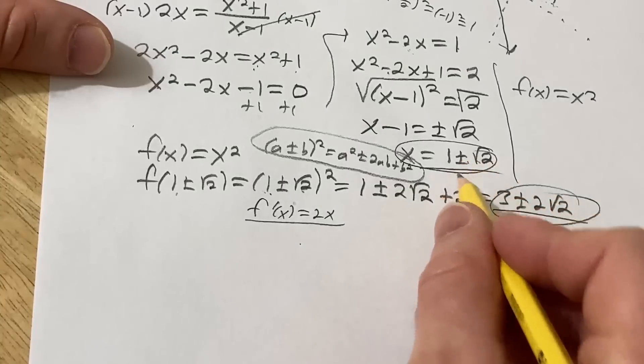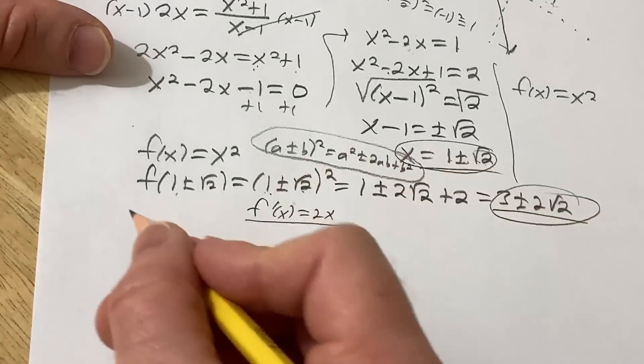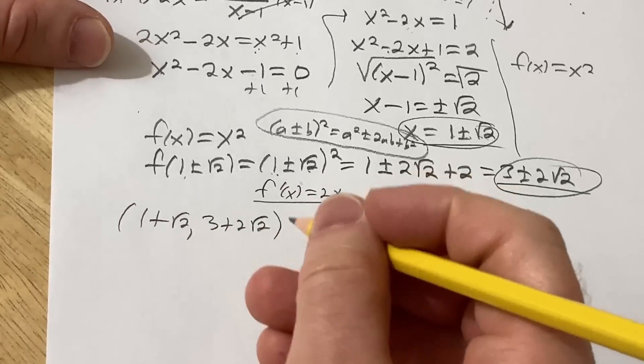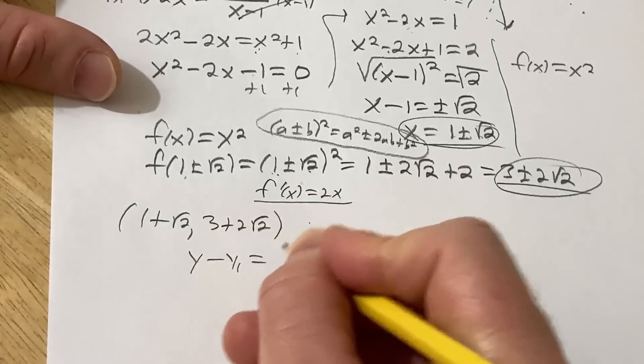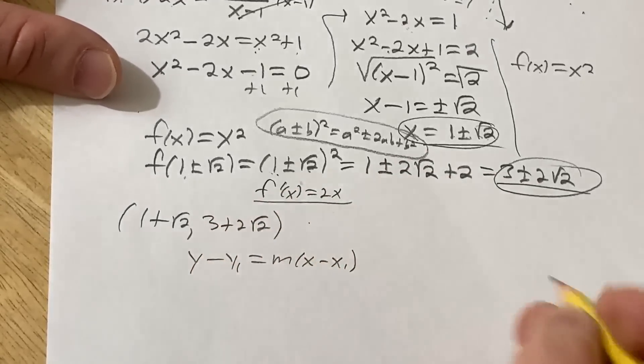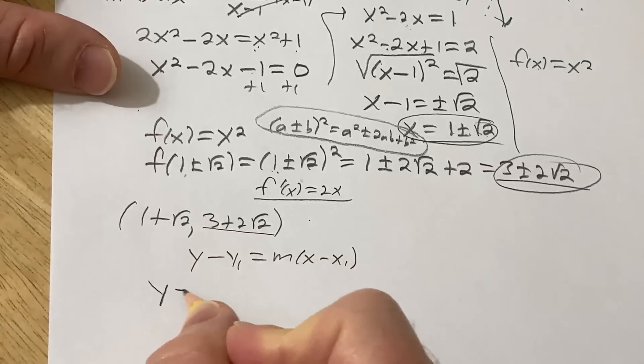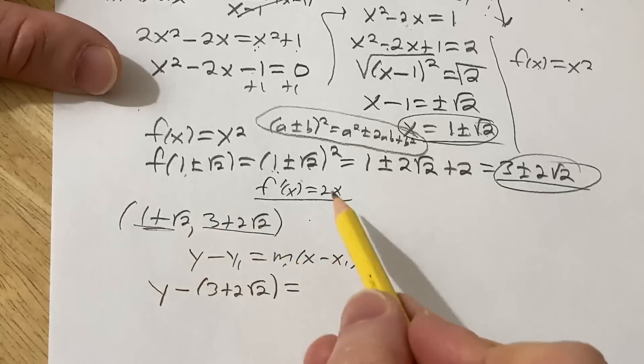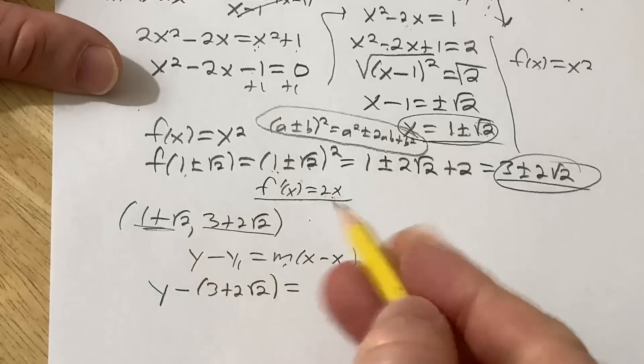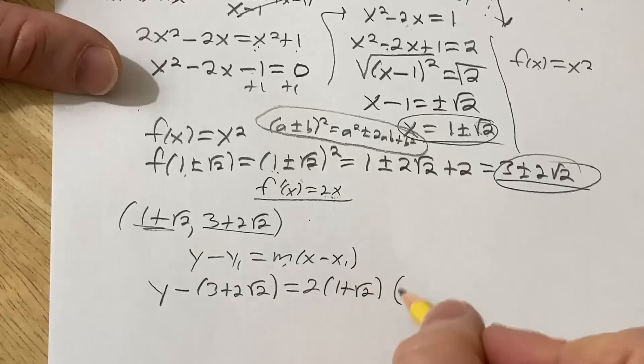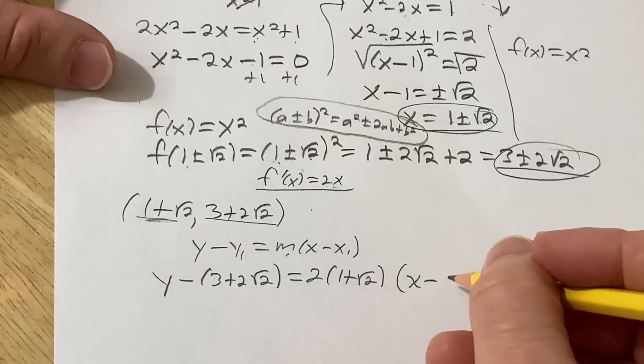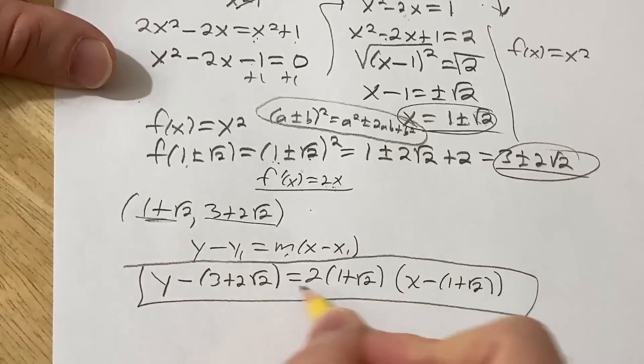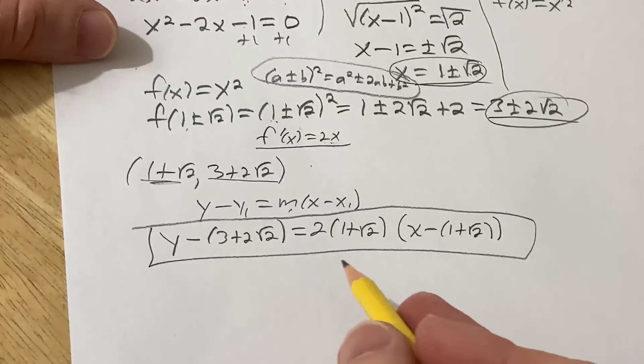So for our first ordered pair, it'll be (1 + √2, 3 + 2√2). That's going to be our first ordered pair. And we're basically going to use the formula y - y₁ = m(x - x₁). And then, so for y₁, we're going to use this. So y - (3 + 2√2) equals. For m, we're going to take our x value and plug it in here because that's our slope, right? So 2 times this. And then x minus our x value, which is here. So that would be one of the answers, right? Obviously, you could distribute the negative 1 here and go from there. But that's one of the tangent lines.